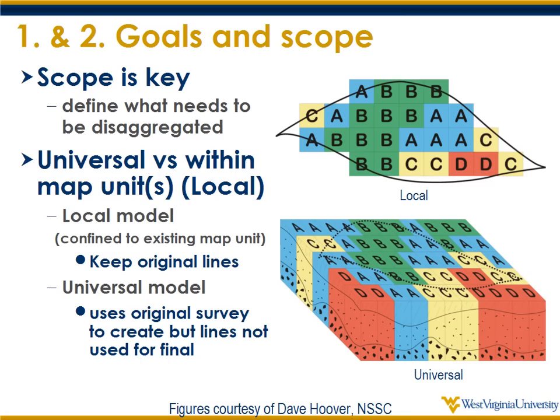For the last step — validation — we had seven independent headcuts we used to ground-truth our disaggregation predictions. Really, when you approach the task, just define what your scope is: what needs to be disaggregated? Are you just interested in one map unit, or at the other end of the spectrum, are we looking at an entire region or project area? There are two themes within that: a local theme where you're constraining things within the original map unit lines, or a universal model where the model spans multiple map units.